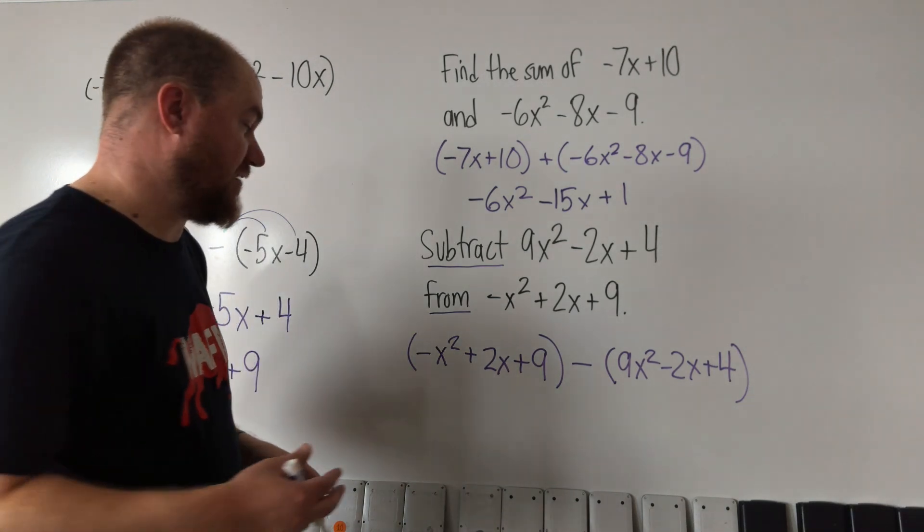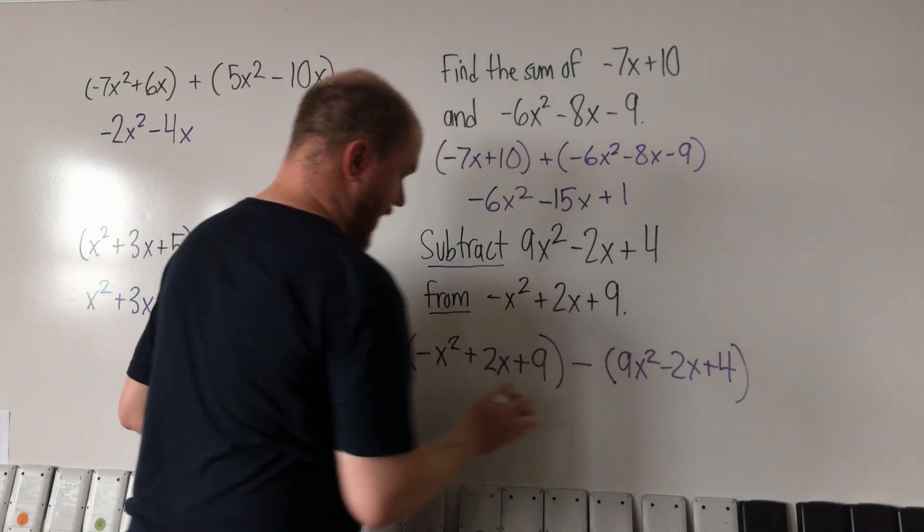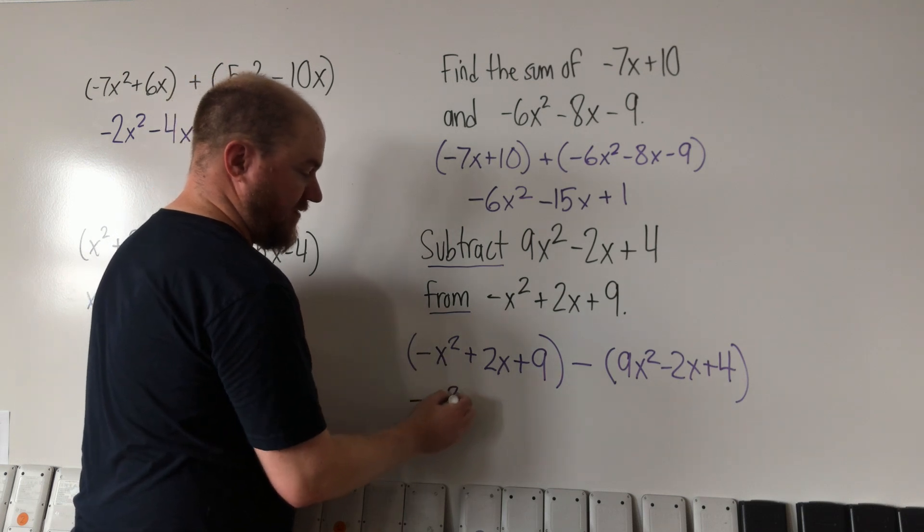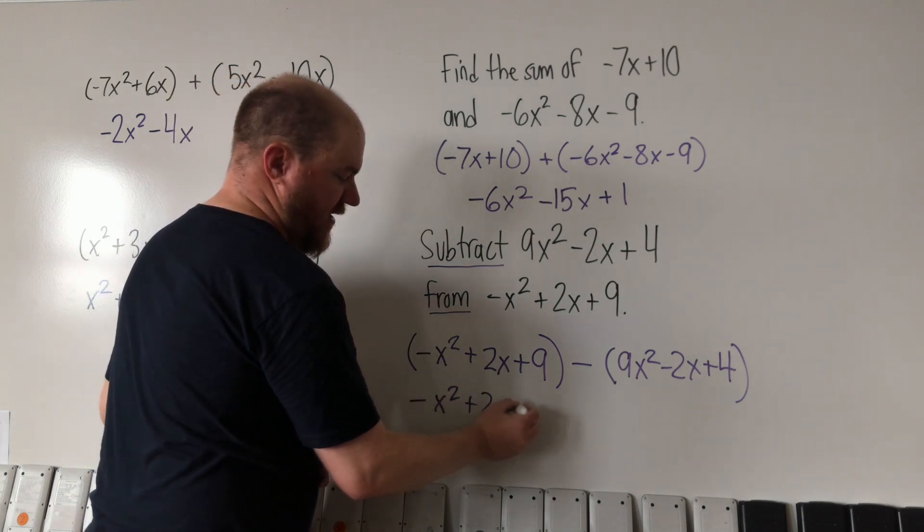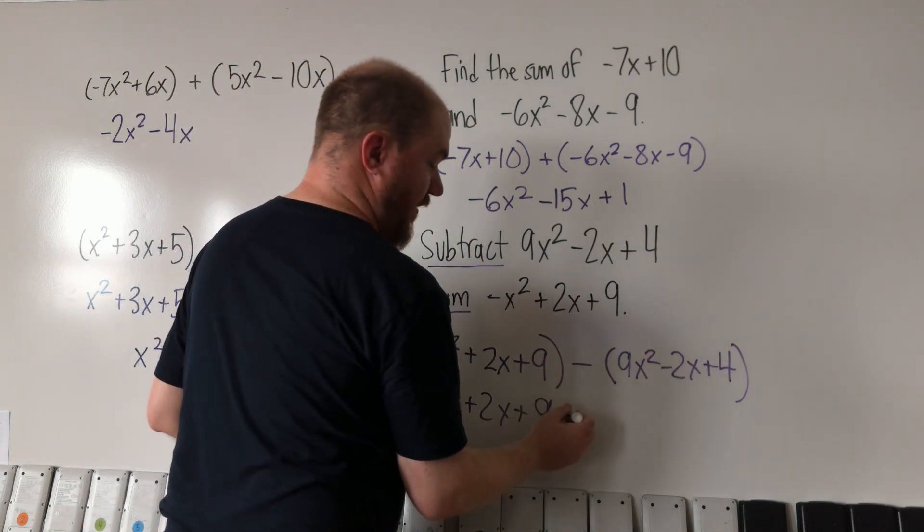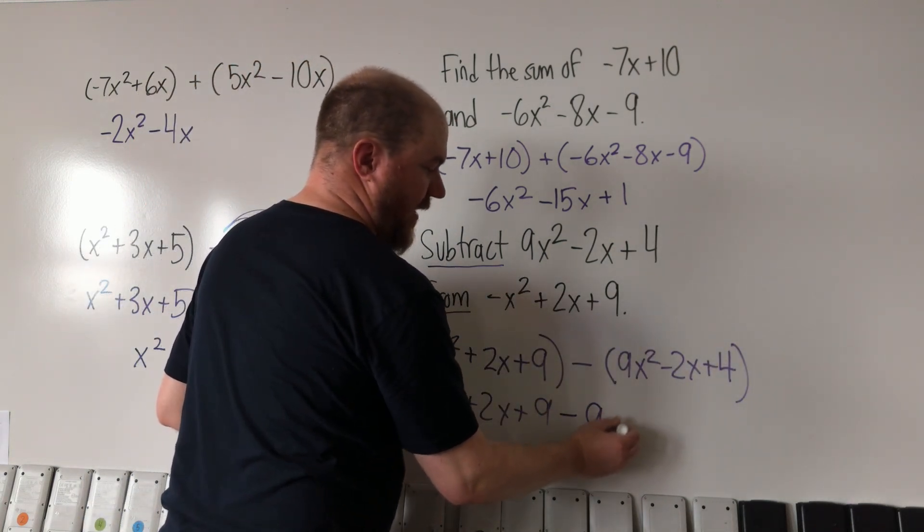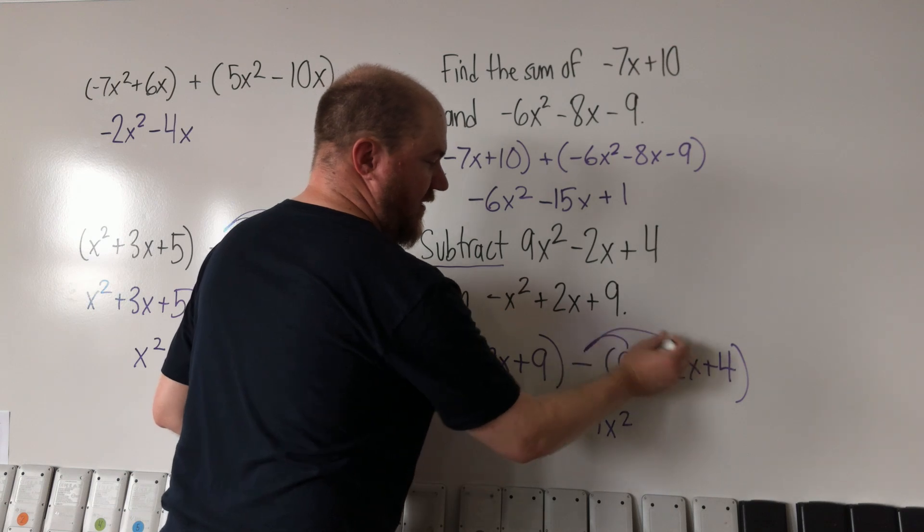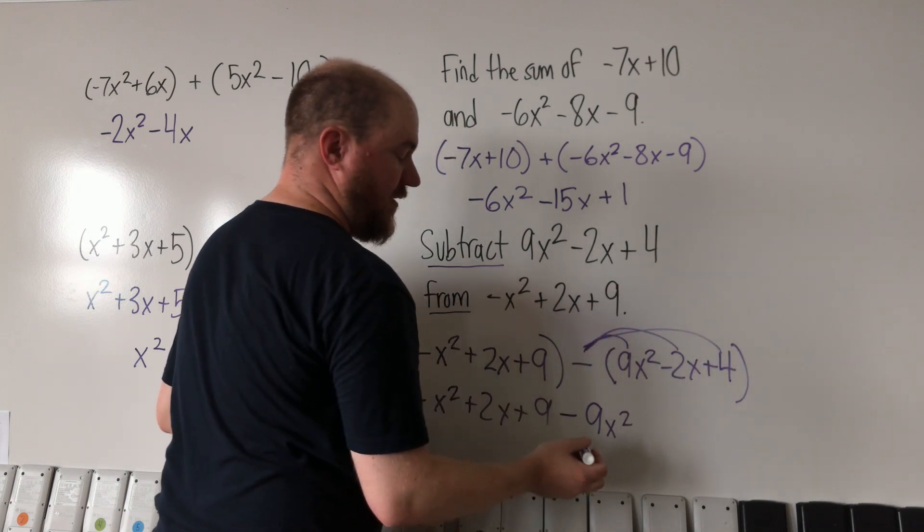And now let's do the same process here. Let's distribute that minus sign. We have negative x squared plus 2x plus 9, nothing in the first term changes. And then everything in the second term becomes its opposite because we're distributing that minus sign to the three terms.